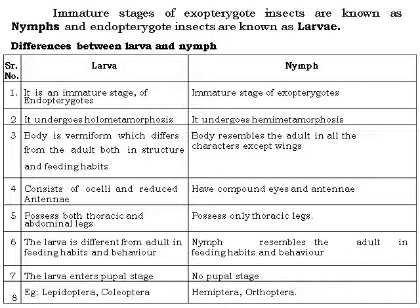Difference between larva and nymph: larvae are the immature stage of endopterygota and undergo holometabolous metamorphosis, while nymphs are the immature stage of exopterygota and undergo hemimetabolous metamorphosis. The larval body is vermiform and differs from the adult in structure and feeding habits, whereas the nymph body resembles the adult in all characters except wings. Larvae have reduced ocelli and antennae, while nymphs have fully developed antennae. Larvae possess both thoracic and abdominal legs, but nymphs possess only thoracic legs. Larvae differ from adults in feeding habits and behavior, while nymphs resemble adults. Larvae enter the pupal stage; nymphs have no pupal stage — only three life cycle stages. Examples of larvae: Neuroptera, Lepidoptera. Examples of nymphs: Hemiptera and Orthoptera.